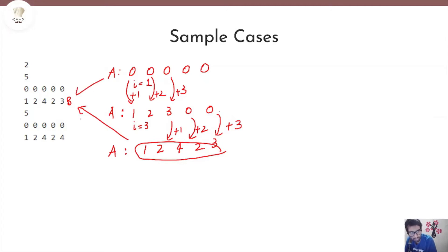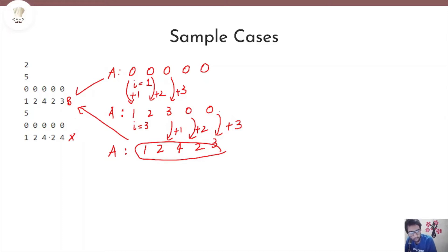In the second case, there is no way to get this array B from the given sequence A. You will always find a mismatch at the last element, and there is no way to form [1, 2, 4, 2, 4] from the given array of five zeros. I highly suggest you try this out.